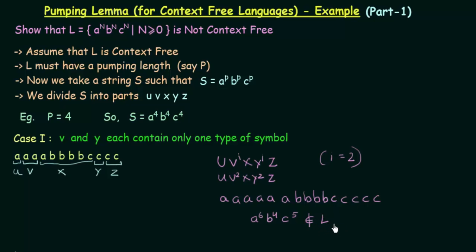This shows that condition number one cannot be satisfied. Since condition number one cannot be satisfied, our assumption that L is context-free does not hold — it is a contradiction. If L was supposed to be context-free, then the string we get should also belong to language L, but it does not. From condition number one itself, we found a contradiction to our assumption, so we can say that L is not a context-free language from case number one.